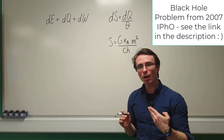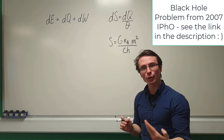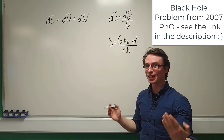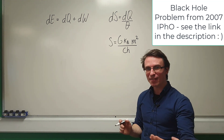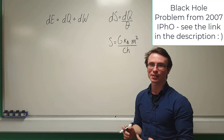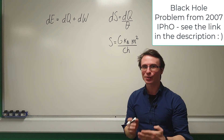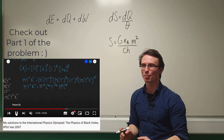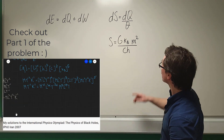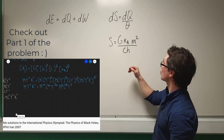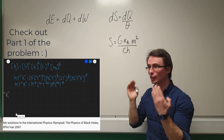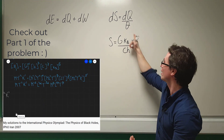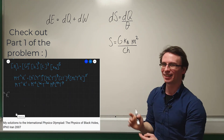This is part 3.1 of a problem from the 2007 International Physics Olympiad. Check out some links in the description for the other parts. In the previous parts we've actually shown that the expression for the entropy of a black hole is this one here.